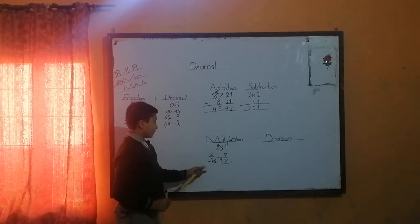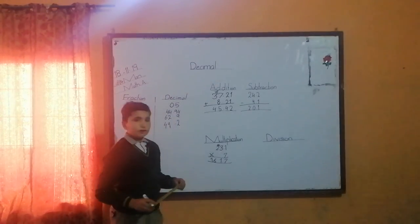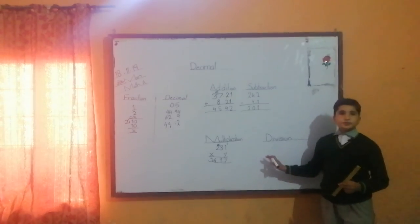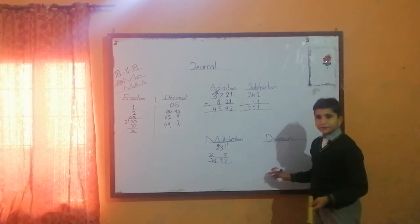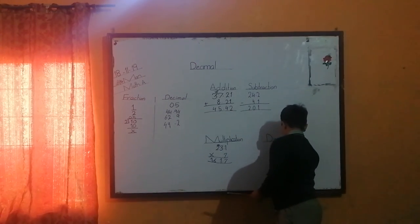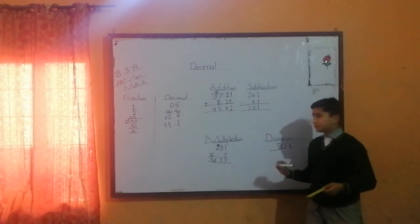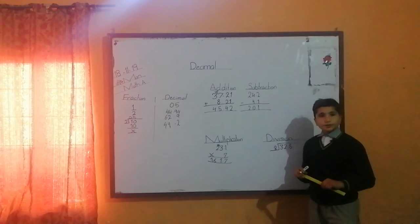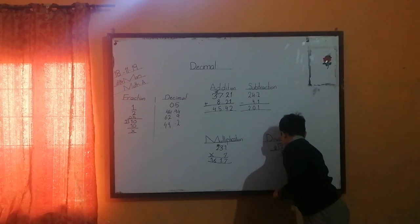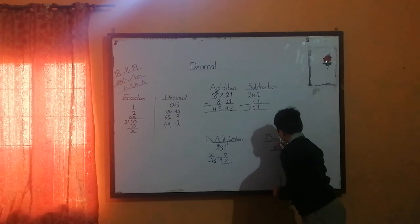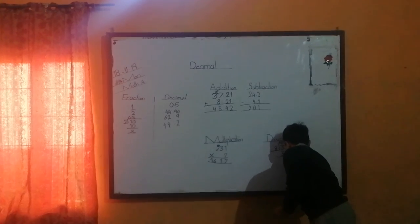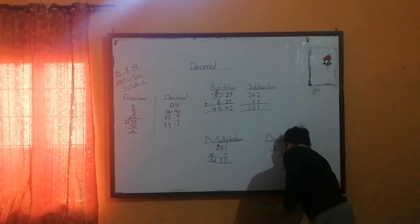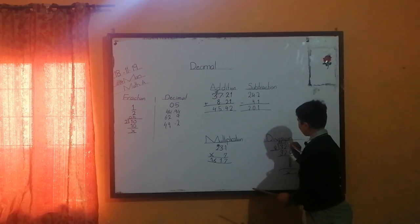The answer is 161.7. Now I will tell you about decimal division. 32.8 divided by 8. 8 fours are 32, and 8 ones are 8. The answer is 4.1. Thanks.